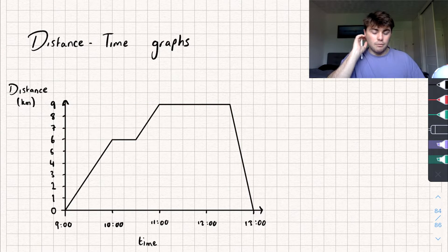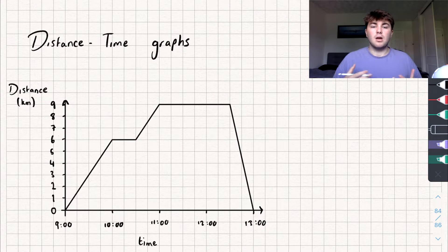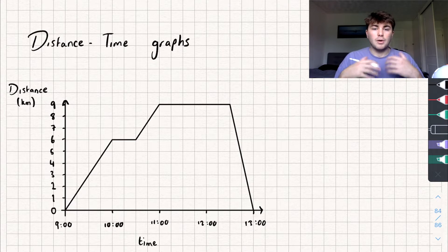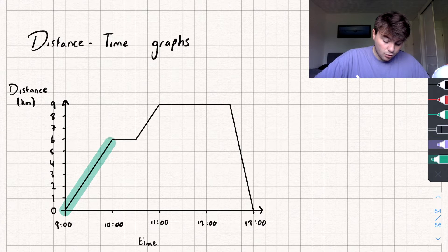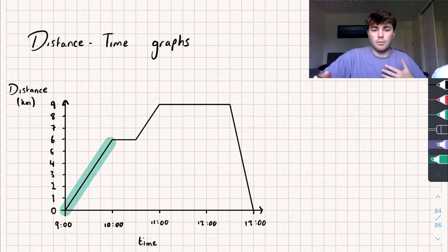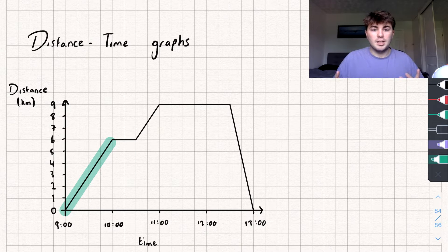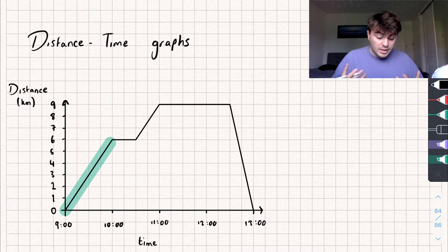What else can I tell using this graph? I can find the speed at which I'm traveling by finding the gradient of a line at a point. Say this increasing part of the graph here, where I'm initially walking away from where I started. Let's find the gradient of the line at that point, which is pretty easy to do.